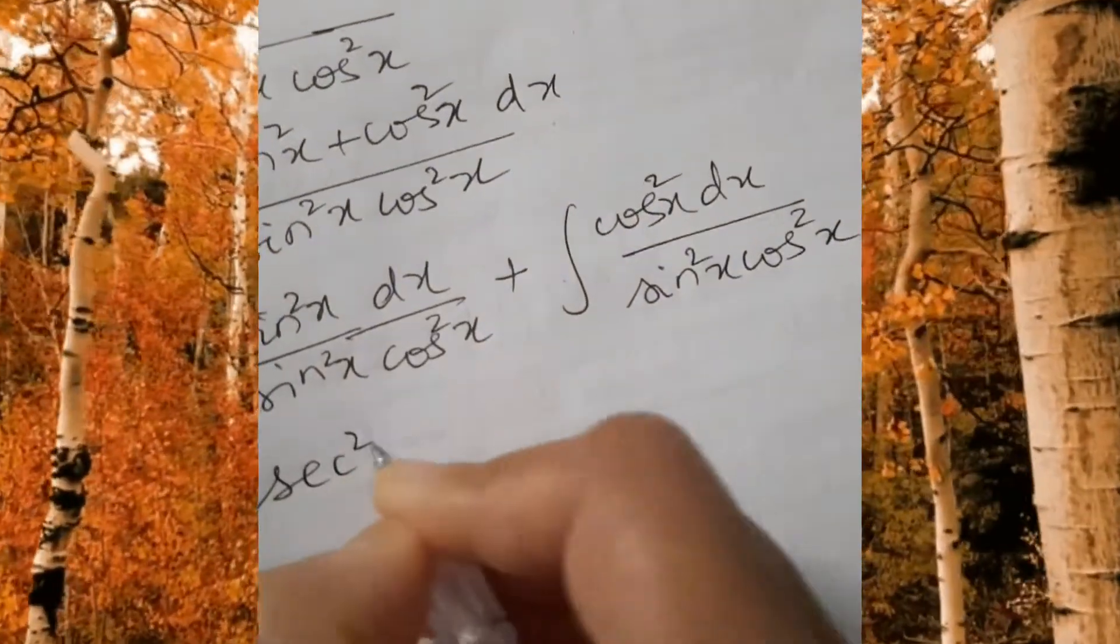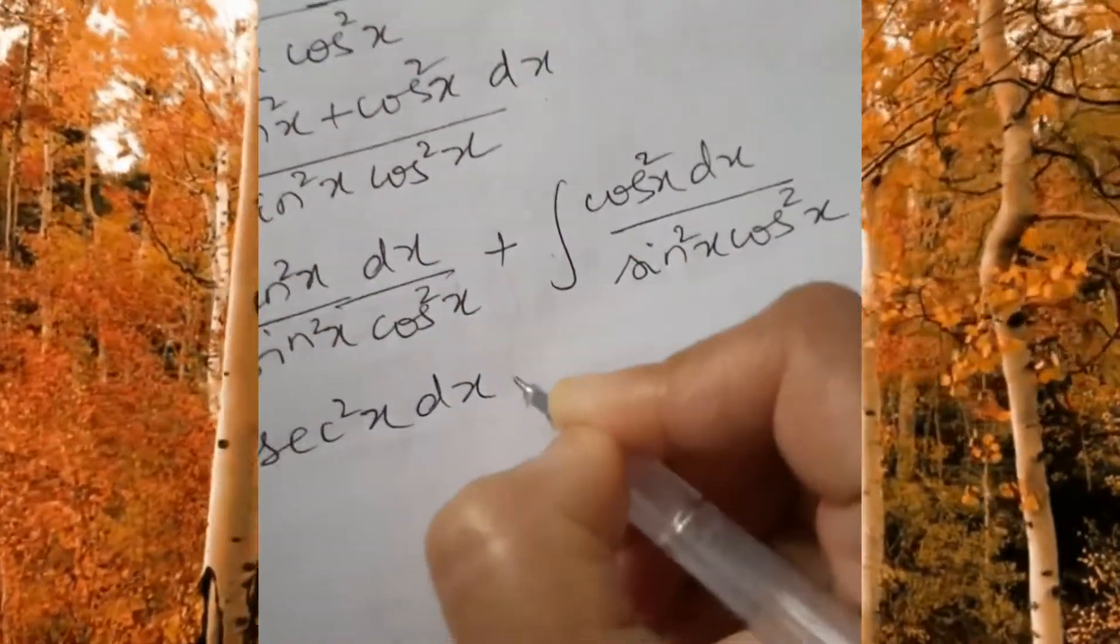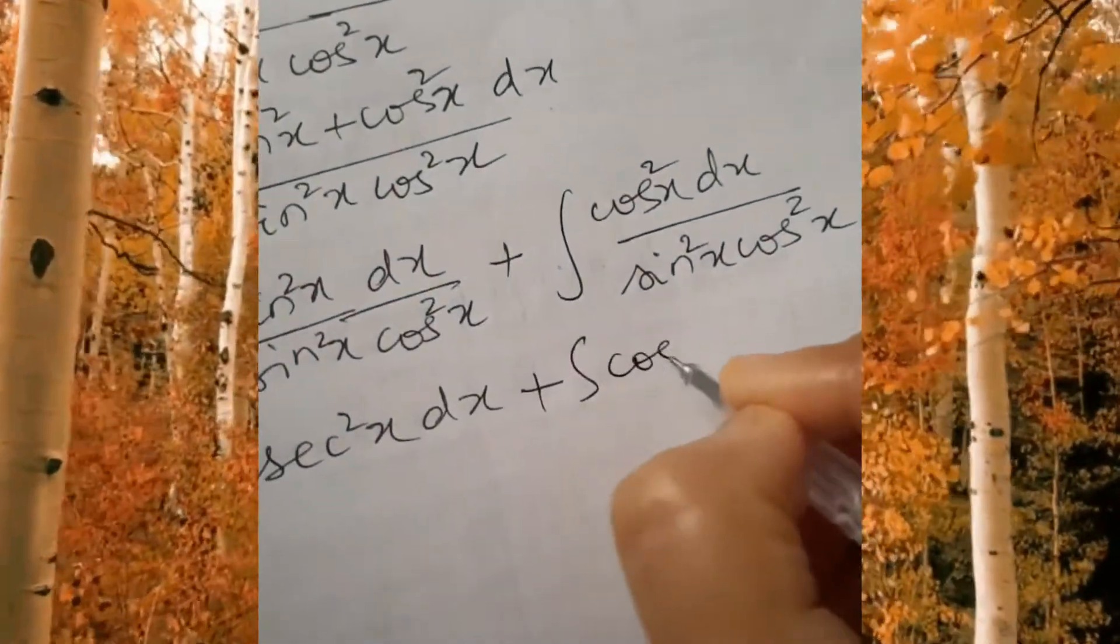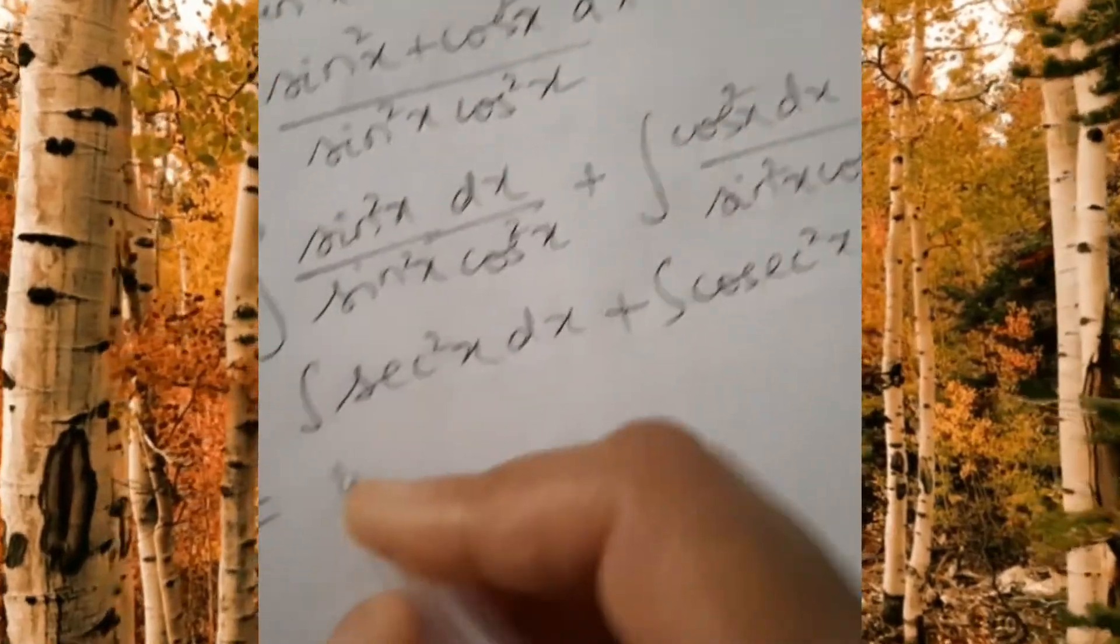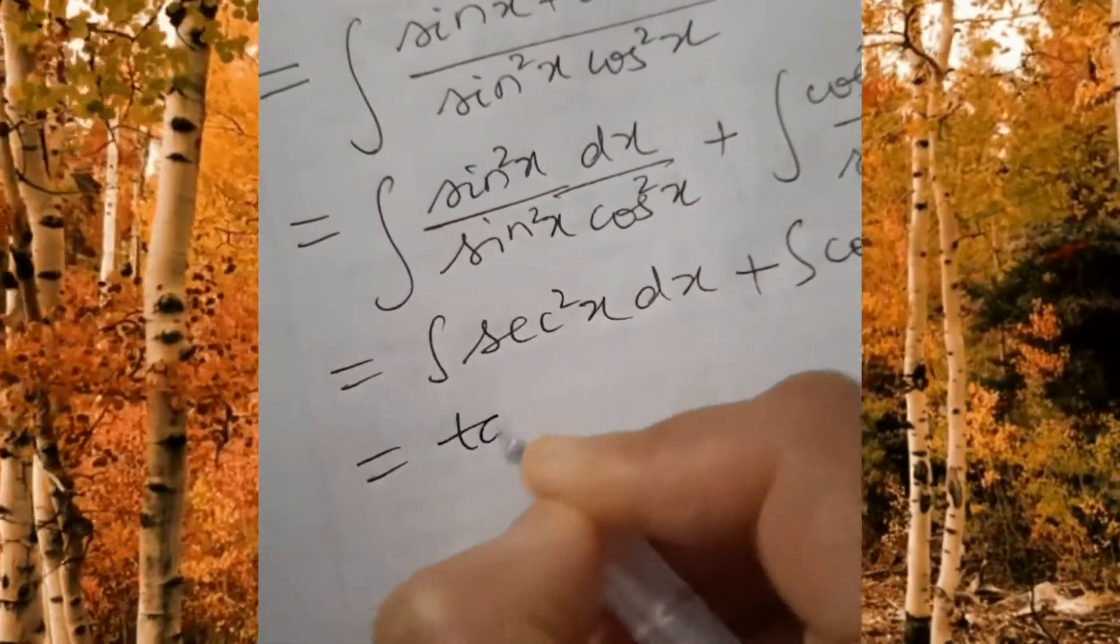Now cancelling sin square x and sin square x we get 1 by cos square x which is secant square x. Here we get cosecant square x.